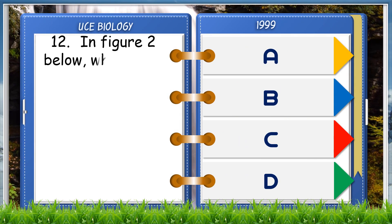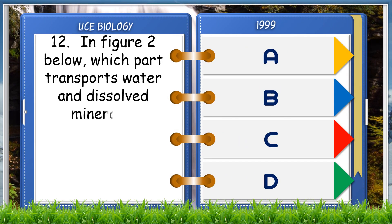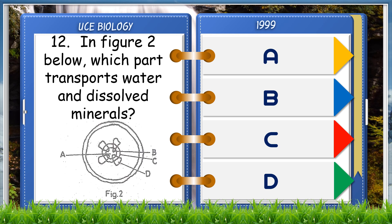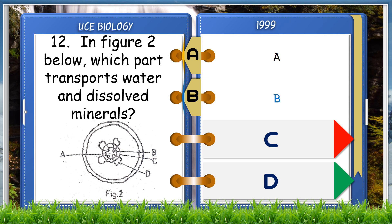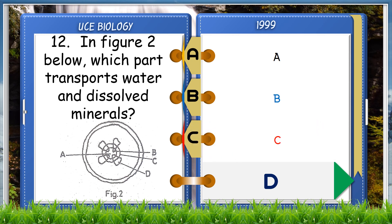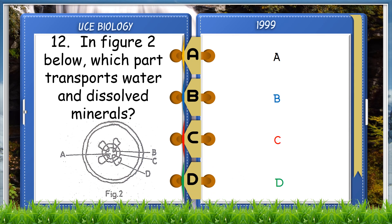In figure 2 below, which part transports water and dissolved minerals? A. A, B. B, C. C, D. D. The answer is B.